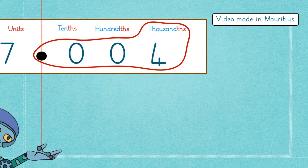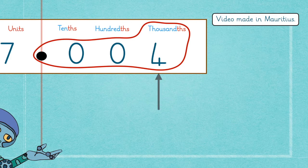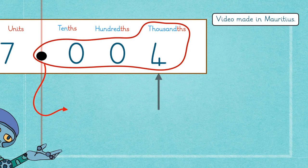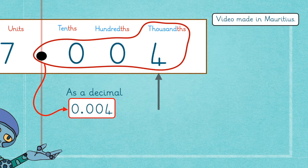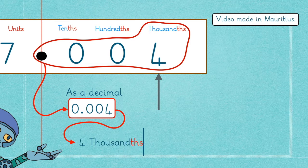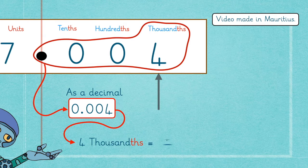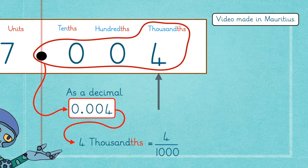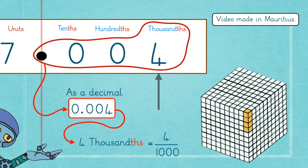Finally, the last fraction here is 4 thousandths, which is the smallest of the three. Its decimal form is 0.004. 4 thousandths means 4 out of 1,000.